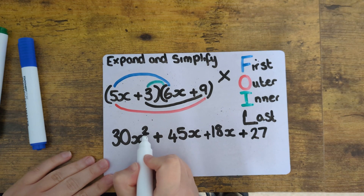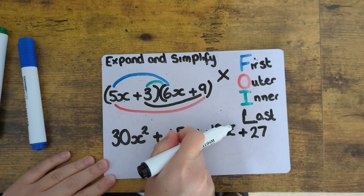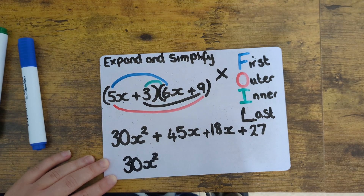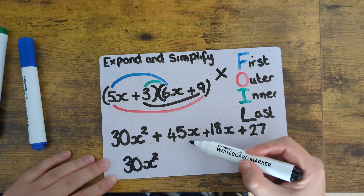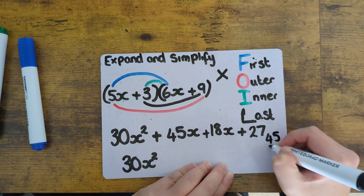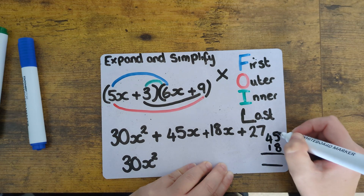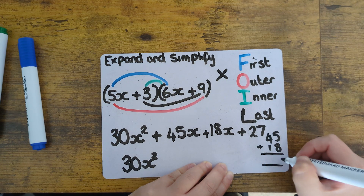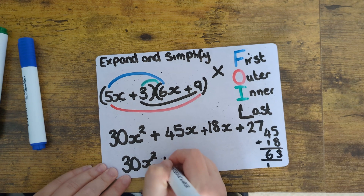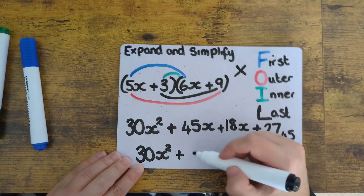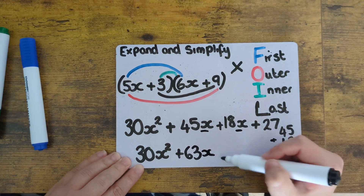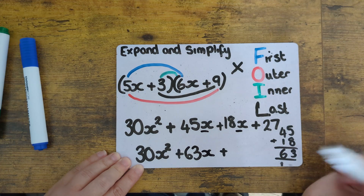Now we've done the expanding, we need to simplify. The 30x squared stays on its own as there's no other terms with indices. Then the 45x and the 18x can be joined together — we're adding them because they're both positive numbers. You can do this in column method if you wanted to, and that gives us 63x. And then lastly the 27 stays on its own as there's no letter.